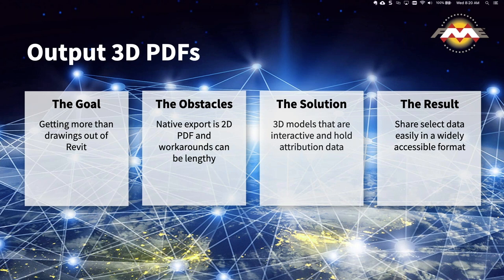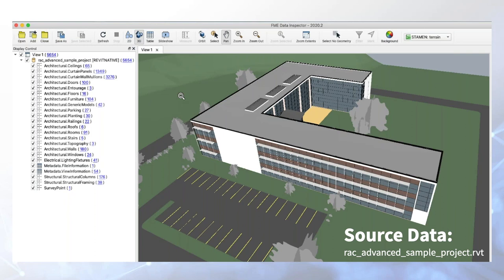Now we're going to 3D PDF. Revit already has an export to PDF, but those are 2D. This example looks at writing to 3D PDF and keeping all of that attribution data, so you're getting more than just pictures — you have something you can interact with, navigate, and select to look at attribute information. This is my source data — some of you may recognize this from Autodesk sample files, the RAC advanced sample project. On the left you can see all the different feature types in FME. The data inspector allows you to preview your data as you go, and it's also embedded in FME Workbench as a visual previewer.